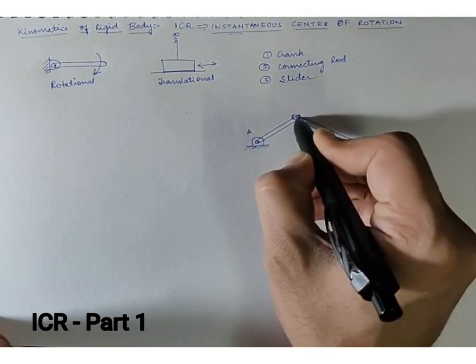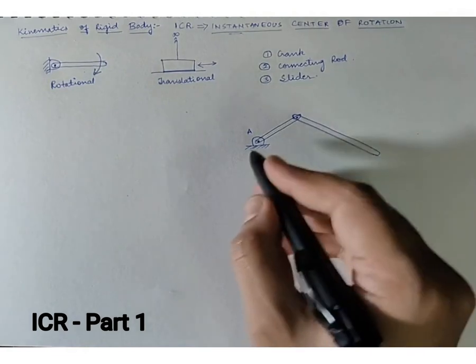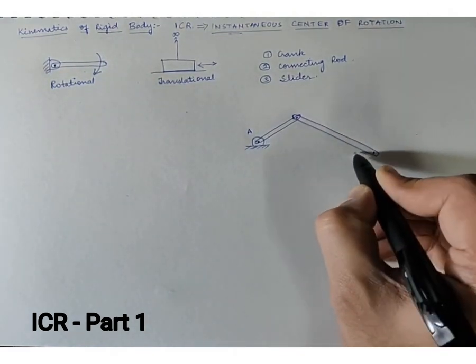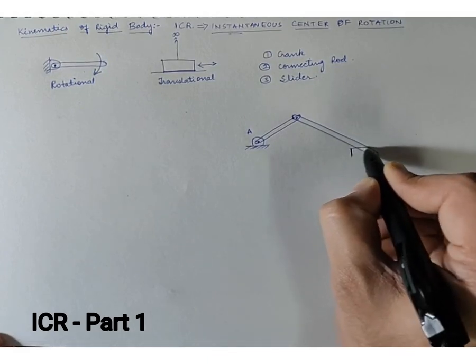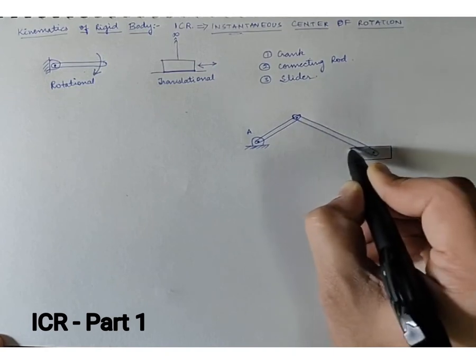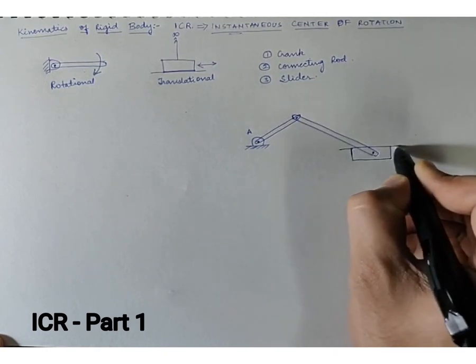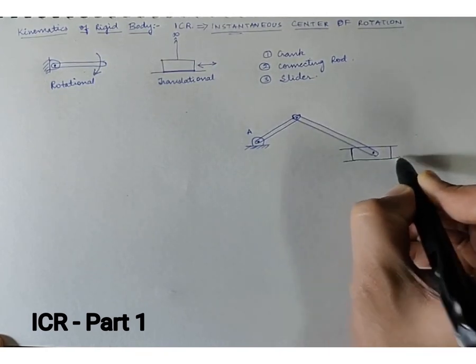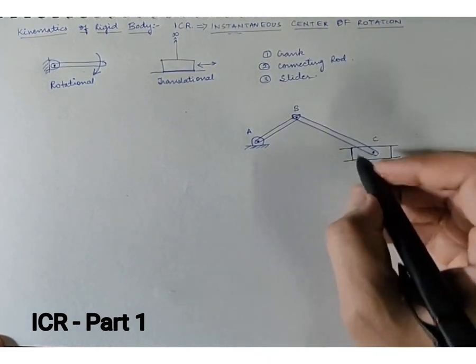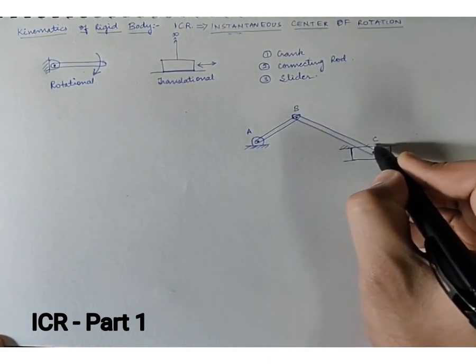This will be my connecting rod, which will be pin jointed with the crank over here. And finally, we have our slider, which is again pin jointed with the help of the connecting rod. So this becomes my joint B, this becomes joint C.